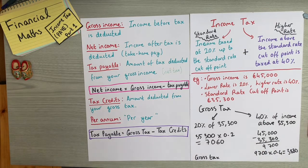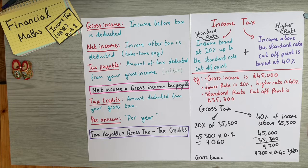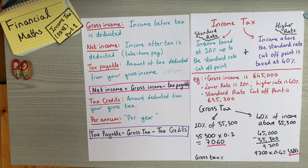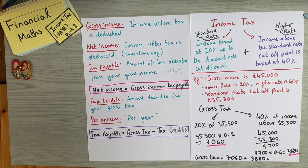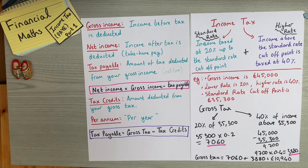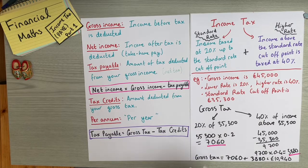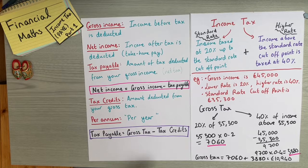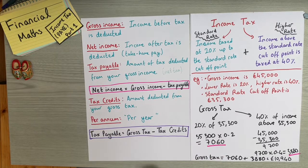The gross tax is those two components added together: €7,060 plus €3,880 equals €10,940. That is the gross PAYE. If we were also to calculate USC and PRSI, we'd add those on to get the actual total gross tax — but since we're only covering PAYE in this video, we stop here.